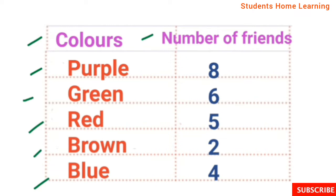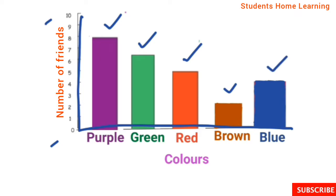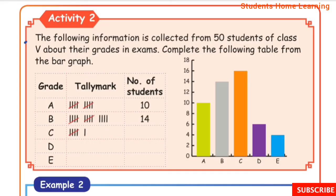Draw a bar graph for this data. Draw the axes. Numbers range by 2s, so plot from 0 to 10. Purple: bar up to 8. Green: bar up to 6. Red: bar up to 5. Brown: bar up to 2. Blue: bar up to 4. Activity 2 bar graph is complete.